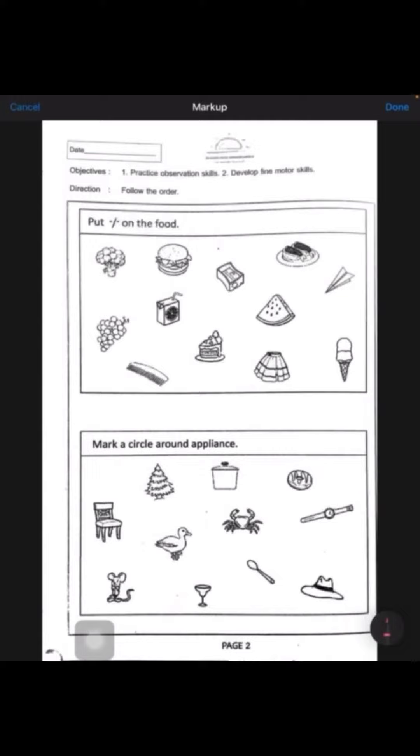We want you to practice having a look at what you see on this piece of paper. Please put a forward slash on the food. You can draw the forward slash line like that on the food. What of these do you think are food? I'm going to show you one example.